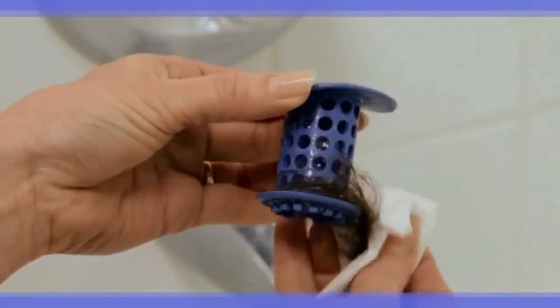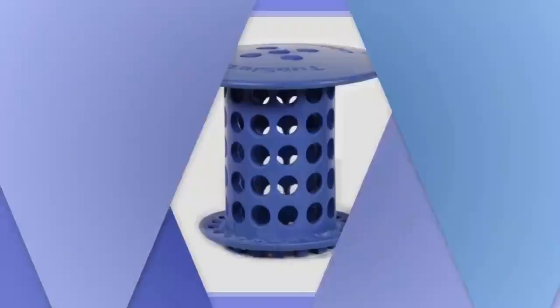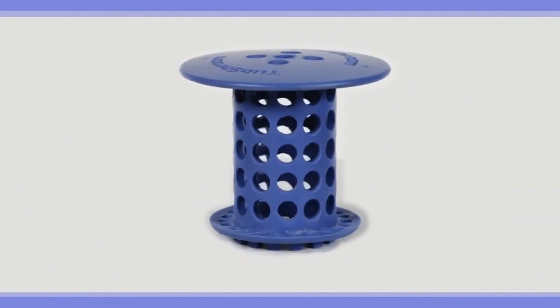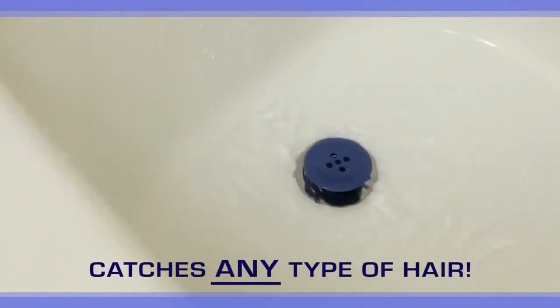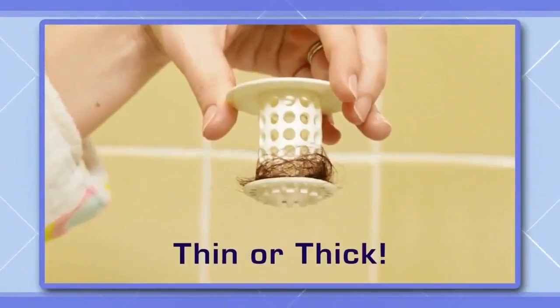TubShroom features a universal design that fits in any standard bathtub drain, and it's guaranteed to catch any type of hair: long or short, thin or thick, curly or straight, even pet hair is no problem for TubShroom.